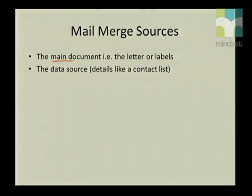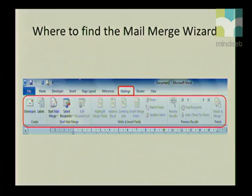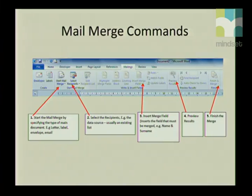A mail merge consists of two sources. The first source is your main document — which is either letters, labels, envelopes, or an email. The second source is the data source, which is something like a contact list. Mail merge is found in the Mailings tab on the mailing ribbon, and there are basically only five mail merge steps to follow.